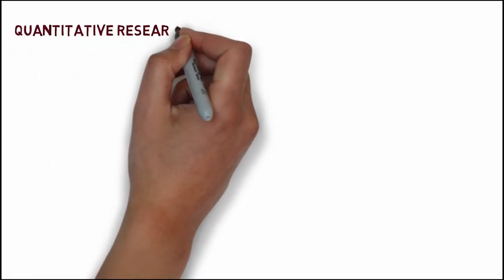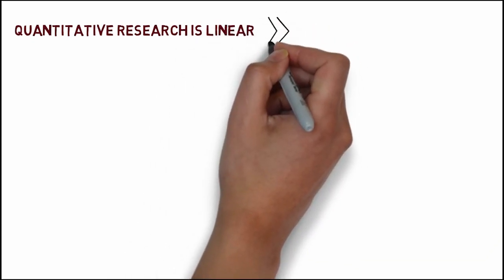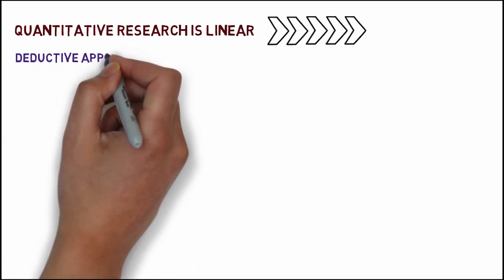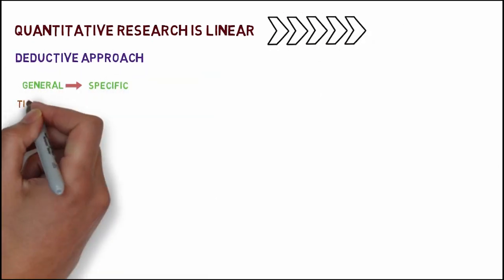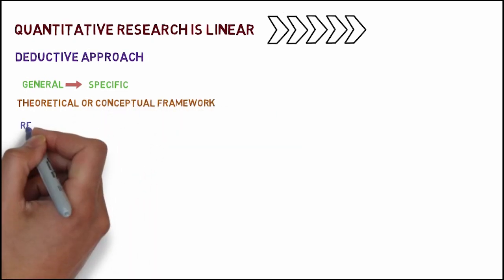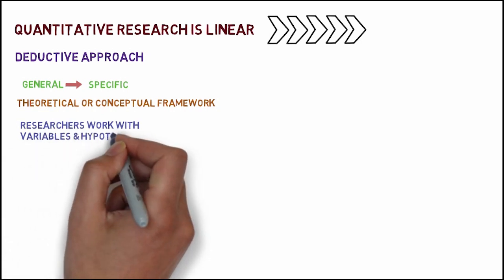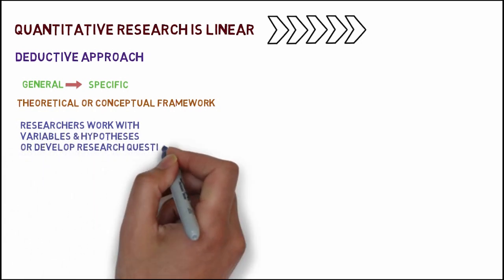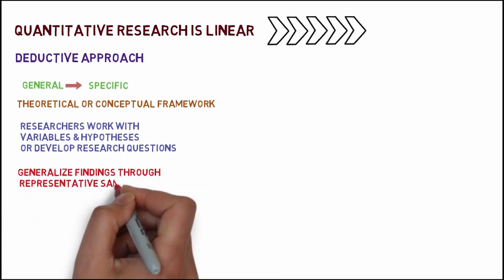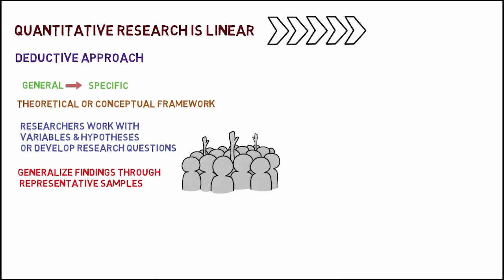The design of quantitative research is linear on the other hand and focused. This is also a step-by-step approach. These researchers follow deductive approach research and start with a theoretical or conceptual framework. In this design, researchers work with variables and test hypotheses or develop research questions.